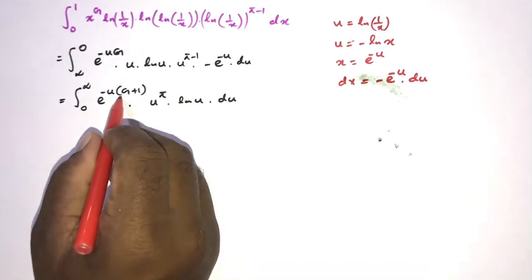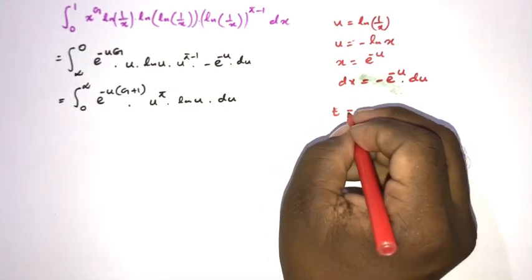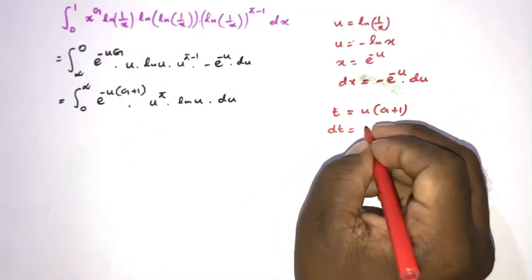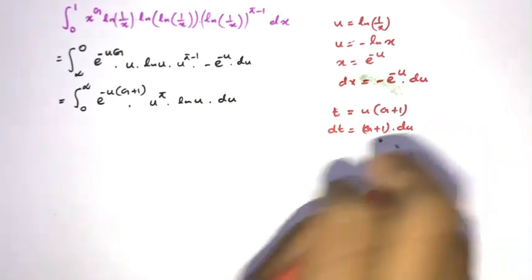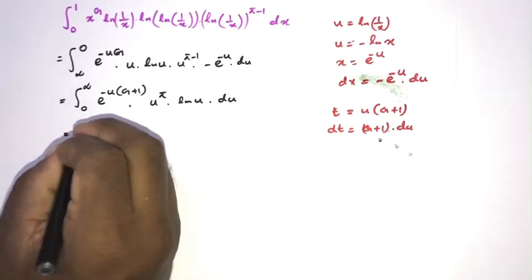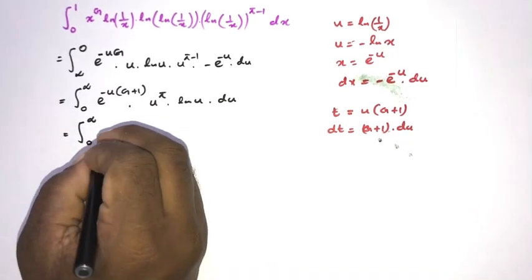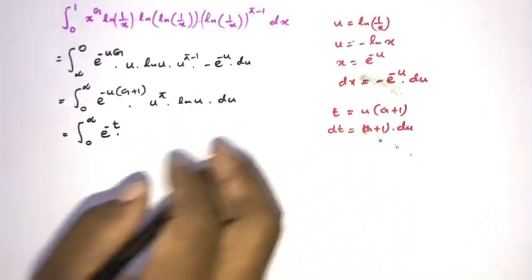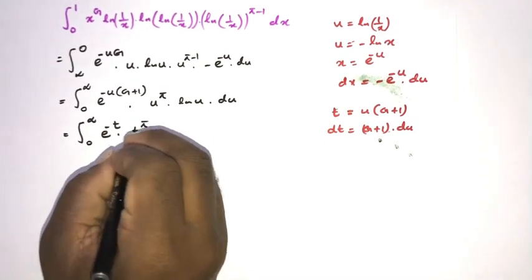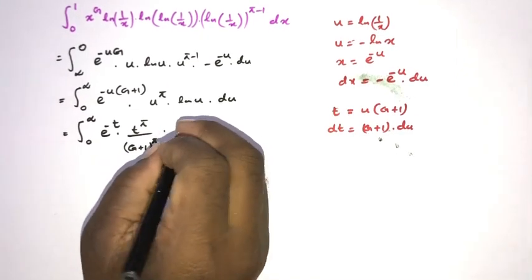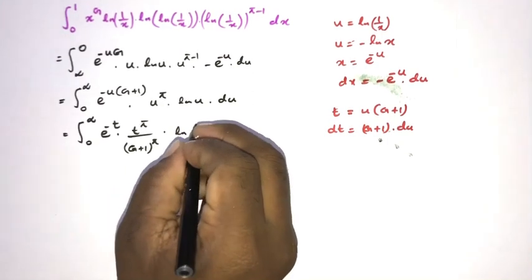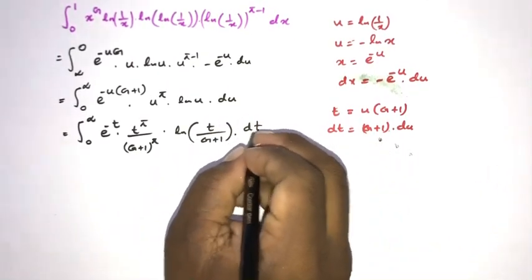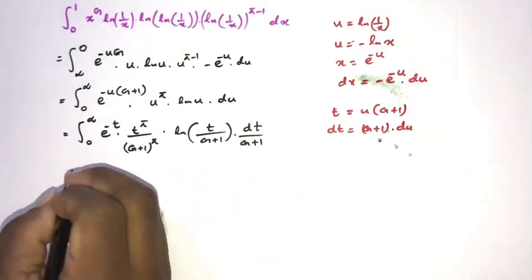Now I'm going to take a second substitution. Let t equal u times (g plus 1). Differentiating, dt equals (g plus 1) du. The limits remain 0 to infinity. Substituting: e to the minus t, and u to the pi becomes t over (g plus 1) raised to the pi, and natural log of u becomes natural log of t over (g plus 1), and du becomes dt over (g plus 1).